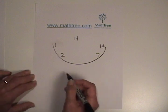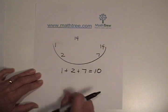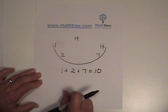And let's add it up. 1 plus 2 plus 7 equals 10. 10 is less than 14, so 14 is not an abundant number.